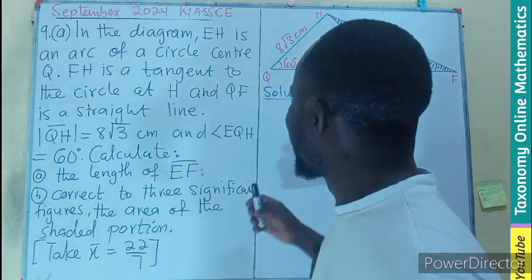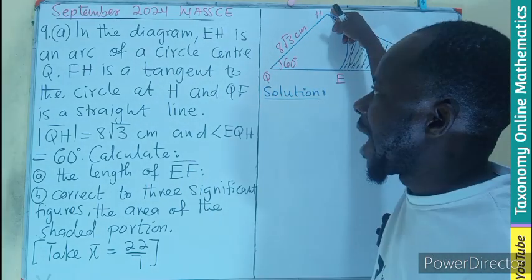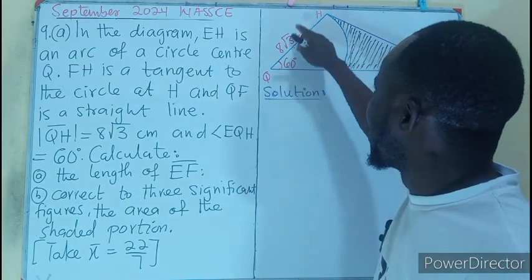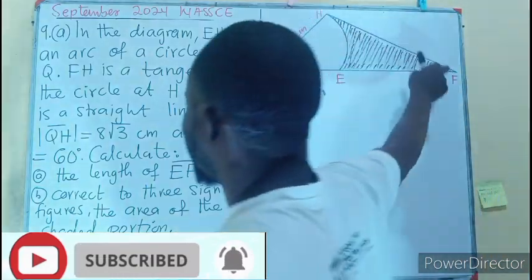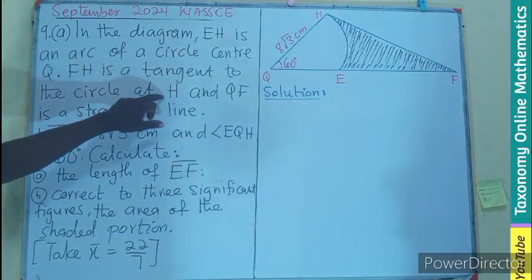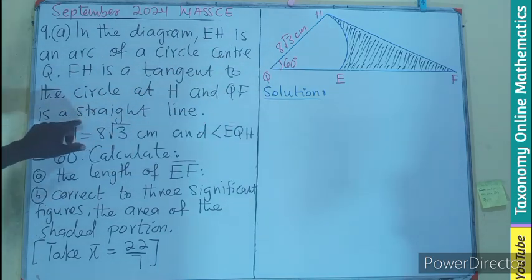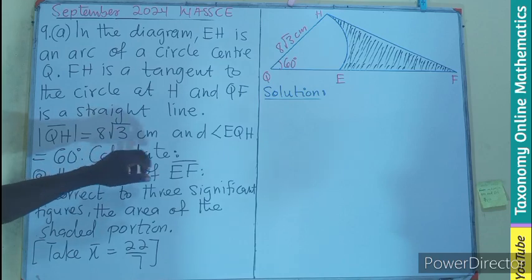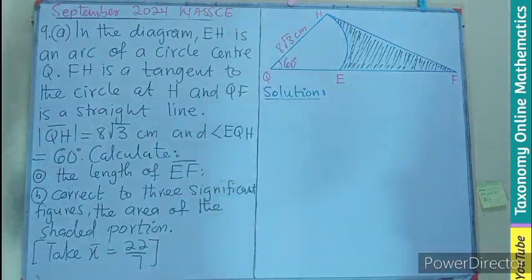In the diagram, EH is an arc of the circle with center Q, and FH is a tangent to the circle at point H. QF is a straight line. We have QH given as 8√3 centimeters.